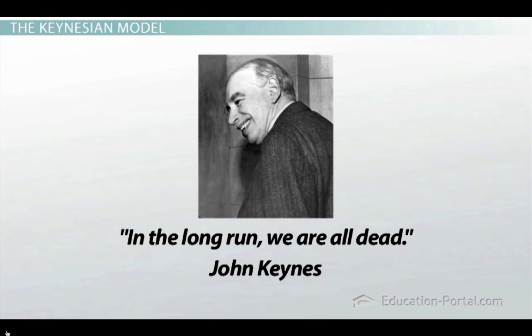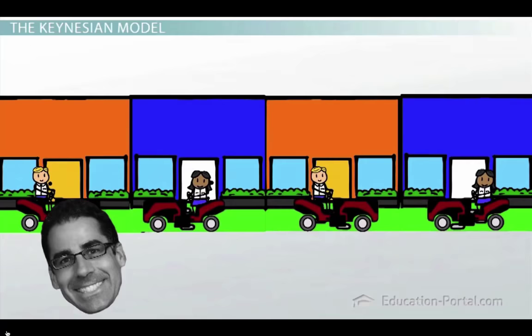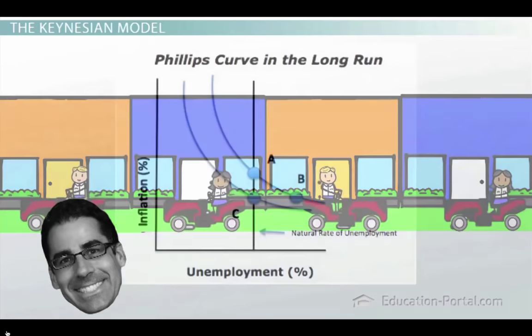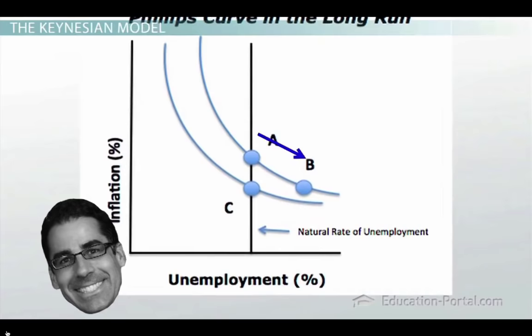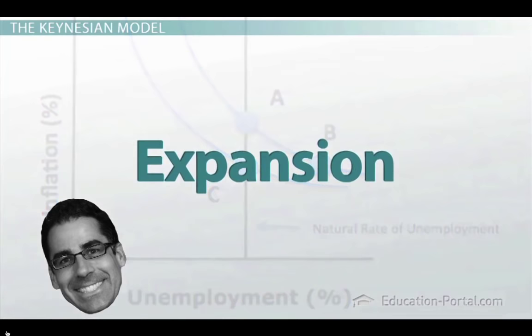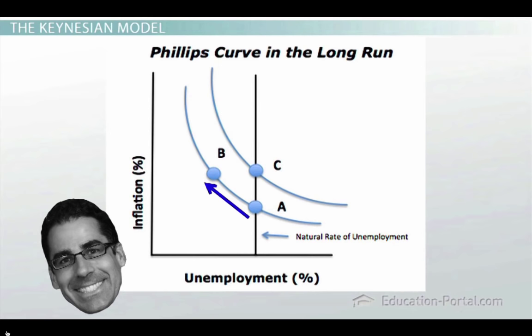The economy may start out in a state of balance in which everyone is fully employed, but strong demand for products and services temporarily pulls the economy above the full employment level — this is what economists call an expansion. When weaker demand temporarily pulls the economy below the full employment level, economists call that a recession.